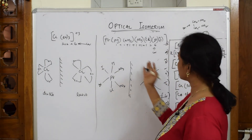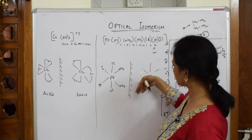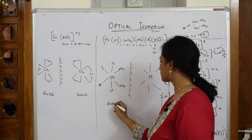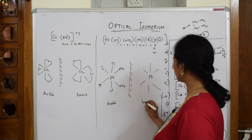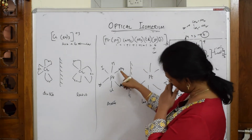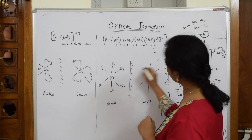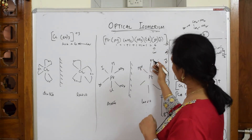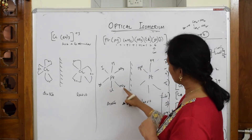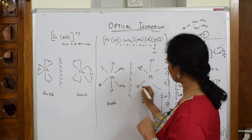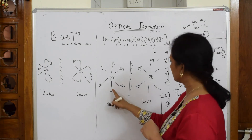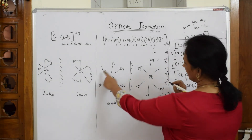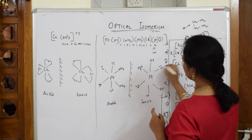Now you have to start in this direction — levo rotatory, as I said, dextro and levo rotatory. This is opposite to this. NH3 and py are in the center. First, one, two — this is opposite to this in the mirror image. Two Cl is here, Br is here, Br and I is here, I — so this is your mirror image.